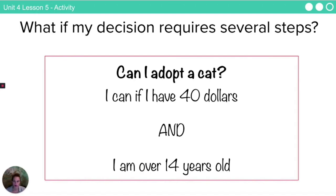Here's another example. What if my decision requires multiple steps? Can I adopt a cat?